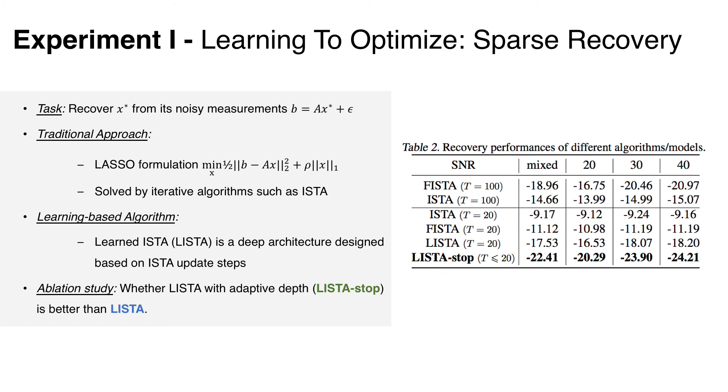Now we will present the experimental results. The first experiment is a sparse recovery problem. This problem can be solved by traditional optimization algorithms such as ISTA. Recently, there are many works on data-driven algorithm design that aim at learning a better algorithm from data to better solve this sparse recovery problem. And LISTA is one of the most popular ones. So we build a model on top of LISTA called LISTA-stop. It allows the original LISTA to dynamically choose which iteration to stop. This result in table 2 shows a significant improvement.